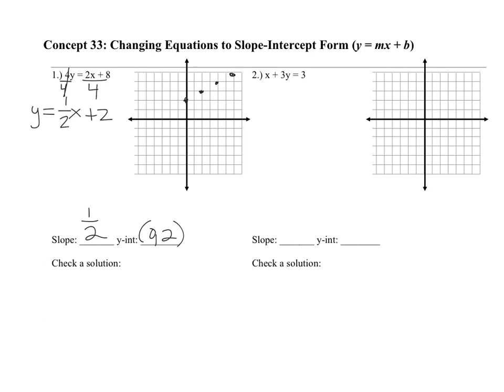If you can't go up and to the right, do the opposite — down and to the left. A quick reminder that down and left are both negative directions, and a negative over a negative is a positive. I've graphed all the solutions that will actually fit on this graph.